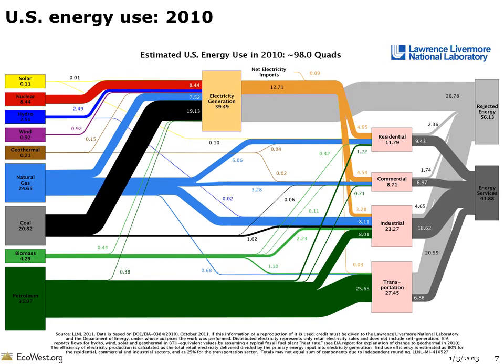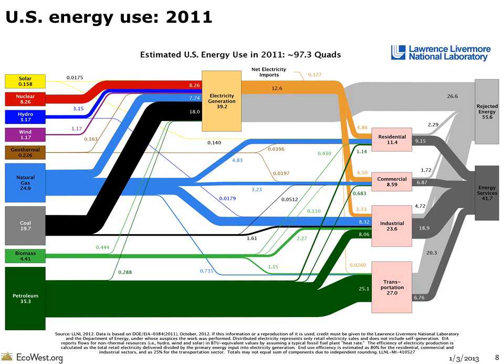Here's 2010. It's worth noting that in this sequence of slides, the size of the rectangles do not vary according to the amount — it's only the thickness of the lines that change from year to year. Here's 2011, the most recent version. Between 2010 and 2011, the thickness of the coal line decreased as the nation shifted toward natural gas.